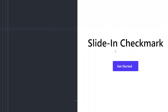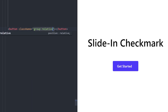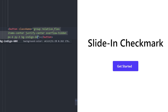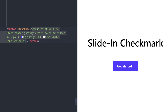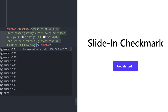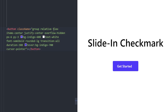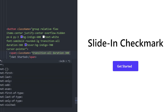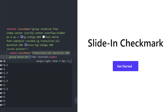Number ten: check mark hover effect. A simple button with a slide-in check mark animation on hover — a little emoji slides in. Create a button with the group class, position relative, flex container, overflow hidden, px-6, py-3, background indigo-600, text white, font semi-bold, rounded large, transition duration 300. On hover make the background indigo-700, cursor pointer. Inside, have two spans — first one has button text, second has the check mark.